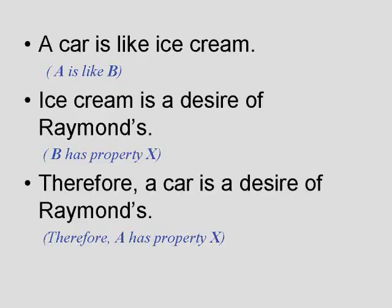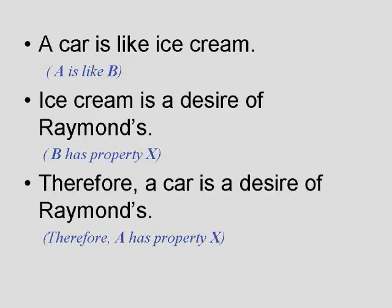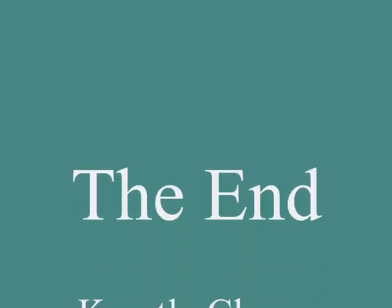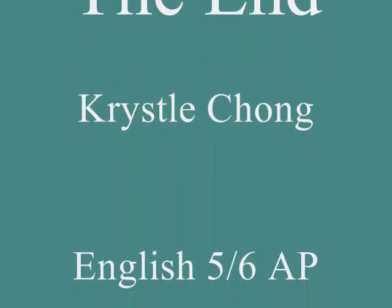A car is being compared to ice cream, which satisfies the condition A is like B. So B, the ice cream, is a desire of Raymond's. Therefore, a conclusion is drawn that A, the car, is a desire of Raymond's too. However, there is no evidence to support the conclusion that Raymond wants a car, since ice cream and a car are two vastly different things. As a result, the analogy is false.